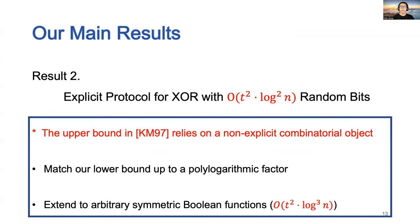Our second result constructs an explicit protocol for XOR with O(t² · log²n) random bits. This is different from the construction in KM97, which relies on a non-explicit combinatorial object. Our upper bound matches our lower bound up to a polylogarithmic factor, and we extend our results to arbitrary symmetric boolean functions.